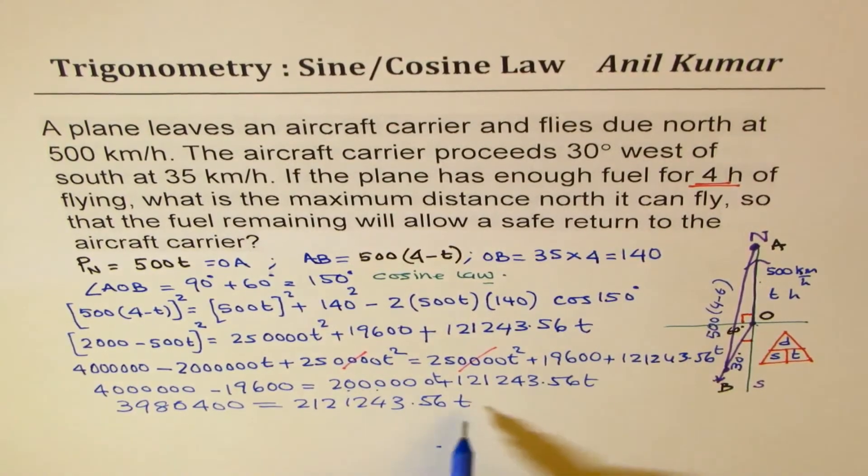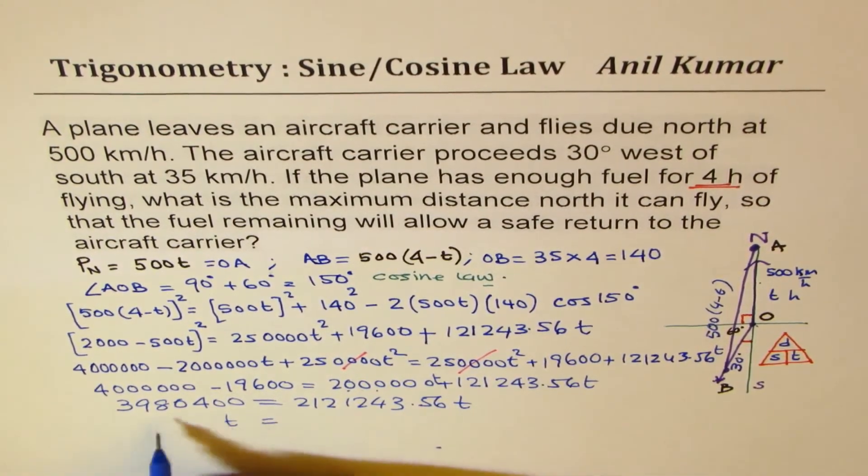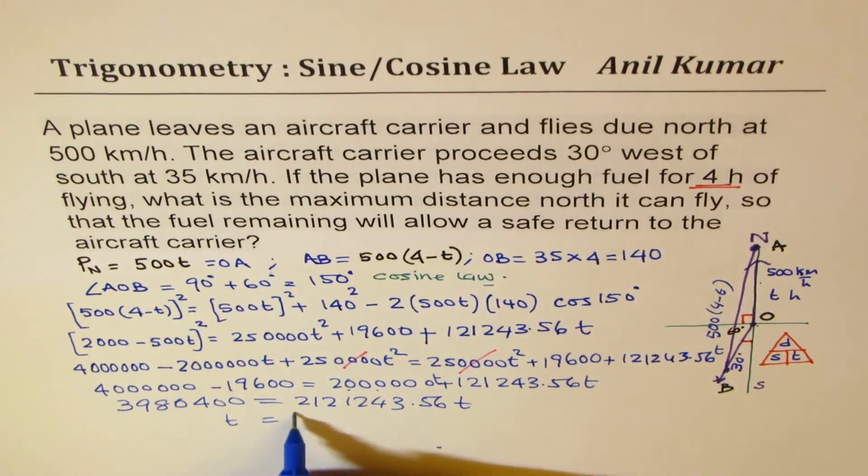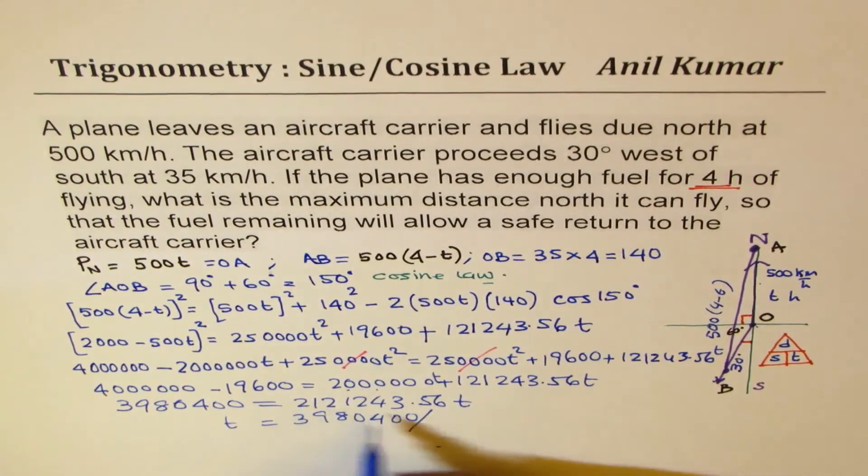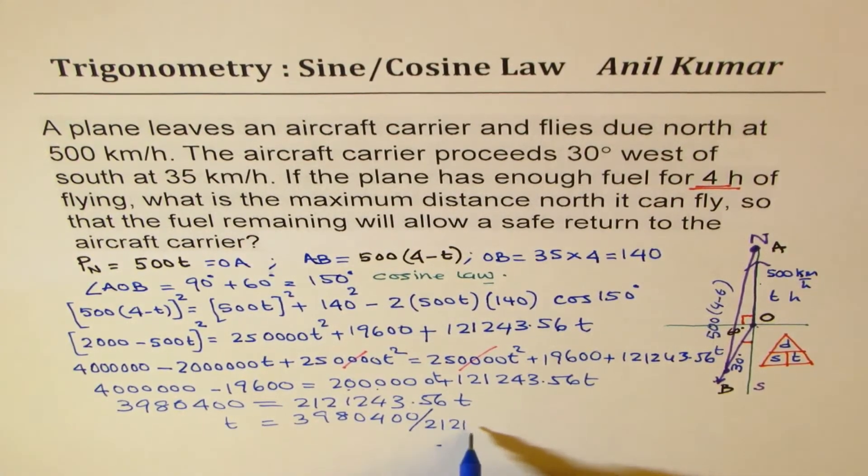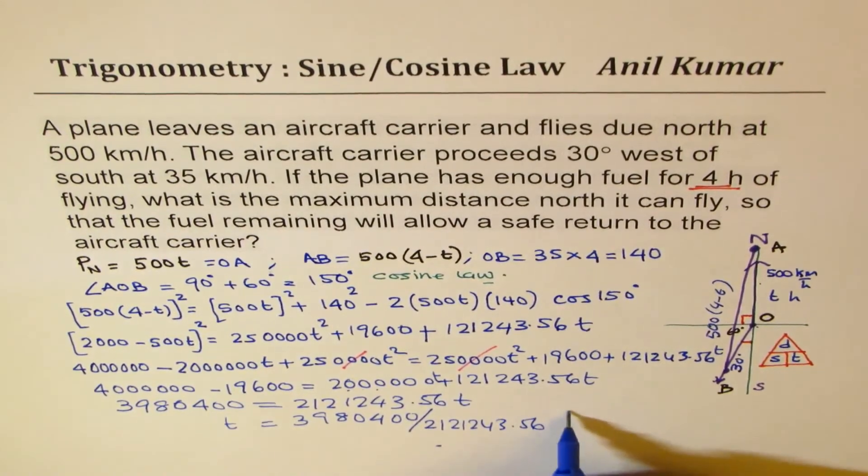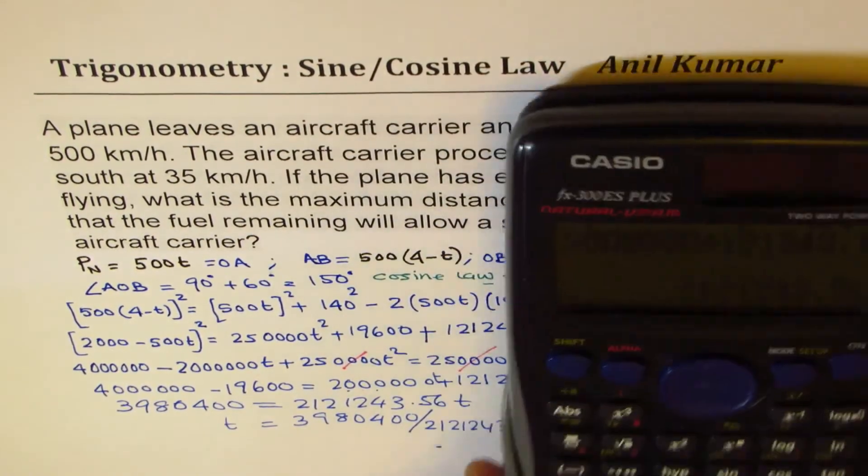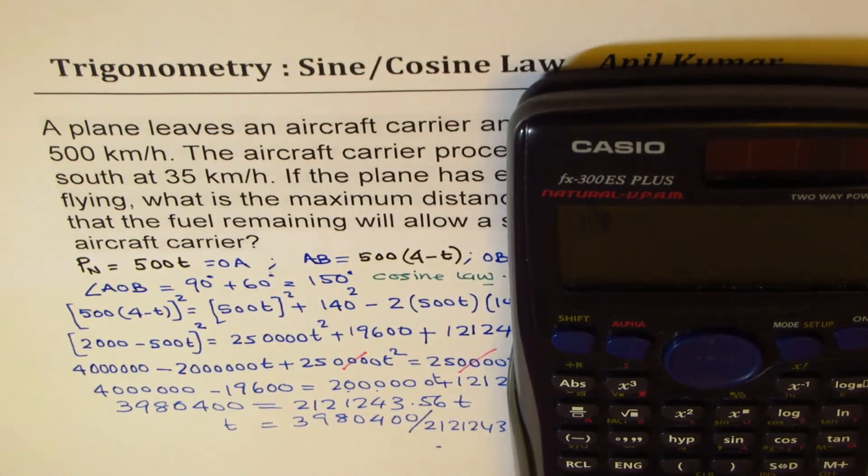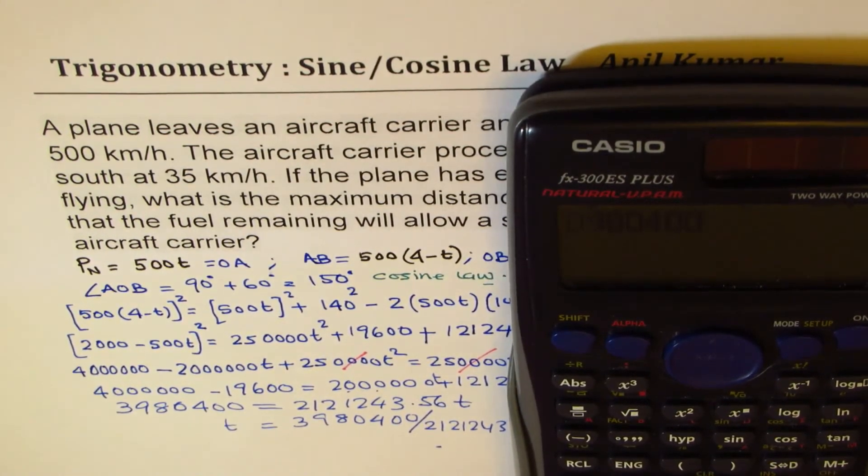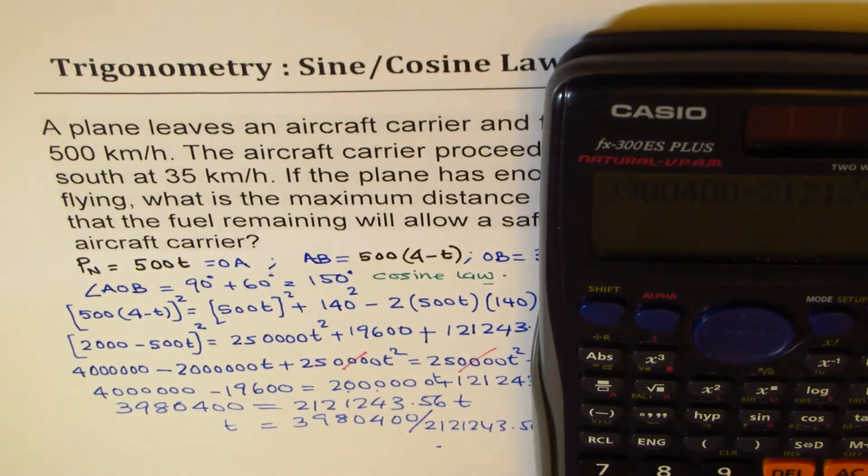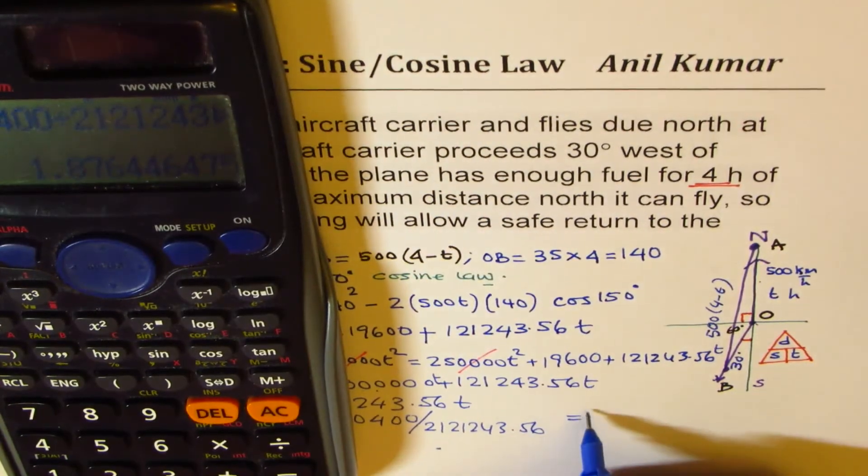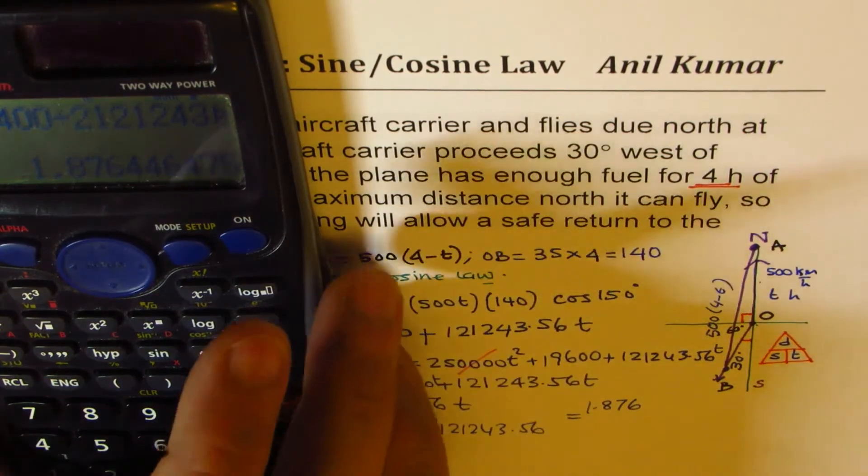So from here, we can find what T is. So T is equal to this divided by that. So 3,980,400 divided by 2,121,243.56 equals to, let's do that. So we have 3,980,400 divided by 2,121,243.56 equals to 1.876.